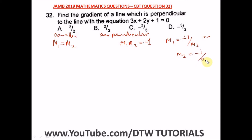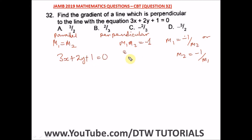From that perpendicular condition, you can get m1 equals negative one over m2, or m2 equals negative one over m1. So first, we need to find the gradient of the given line, since we have two lines and one must be perpendicular to the other.